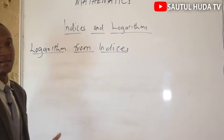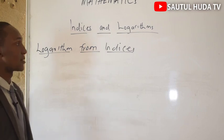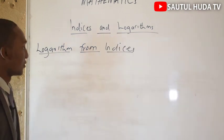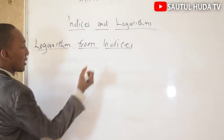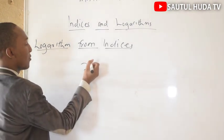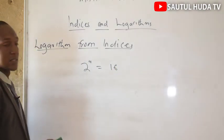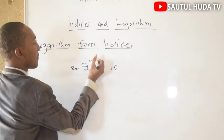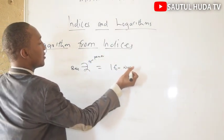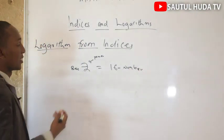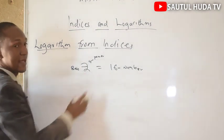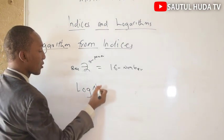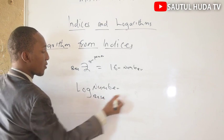Logarithm is derived from indices. If you remember indices and how indices work, indices is the index form and logarithm is the logarithm form. For example, from indices: 2 power 4 equals to 16. This is the index form. If you notice, 2 is the base, 4 is the power, and 16 is the number.